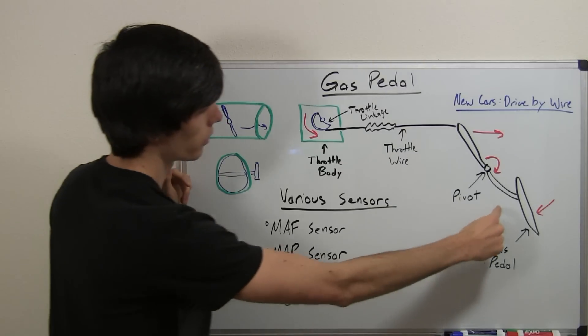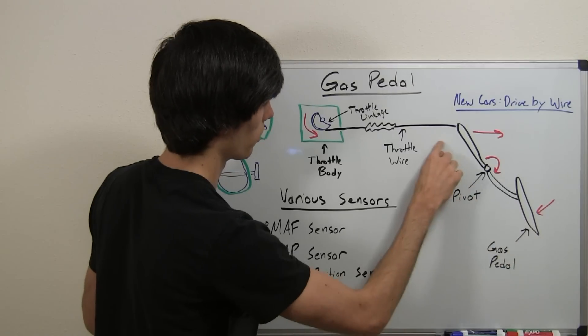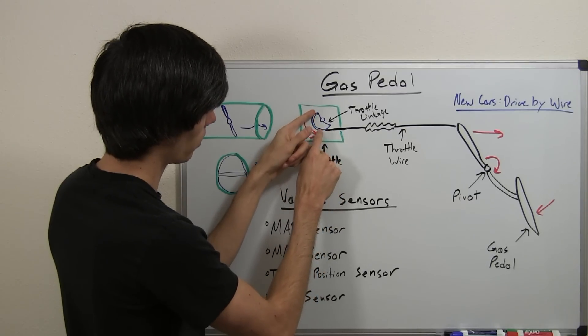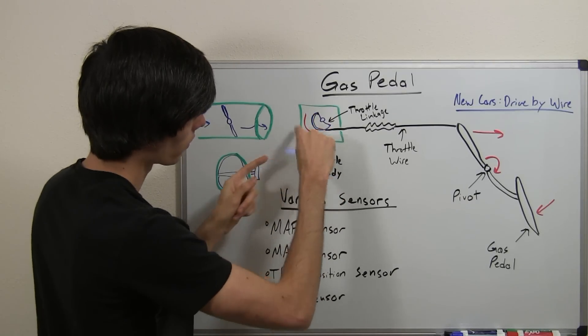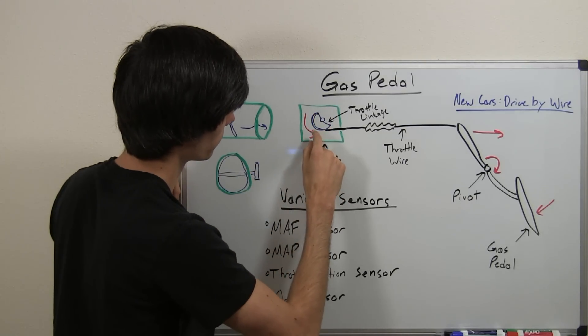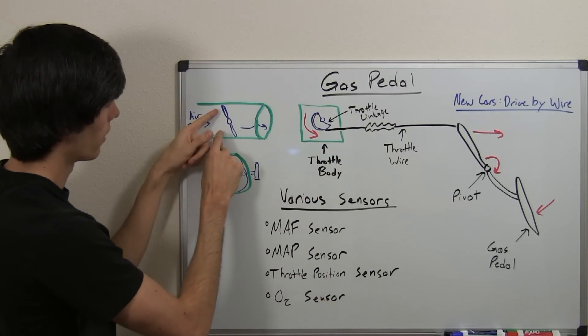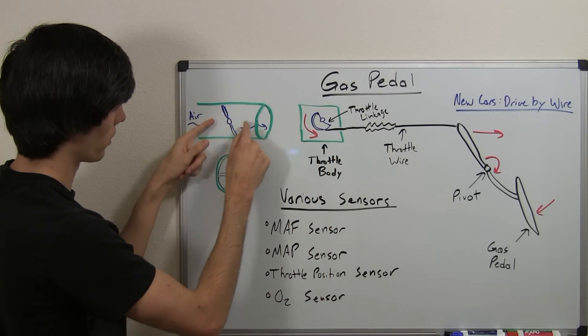Now when you floor it, when you push this gas pedal down all the way, you're going to turn this so this throttle wire is going to pull here on this throttle linkage and rotate it counterclockwise and as it does that this butterfly valve is going to open up.